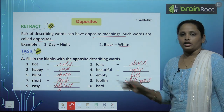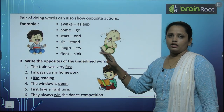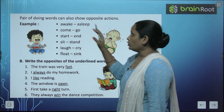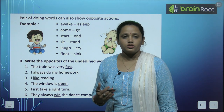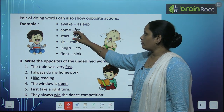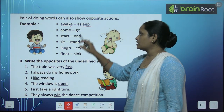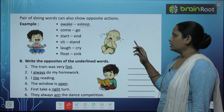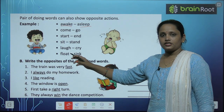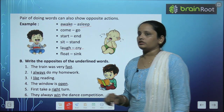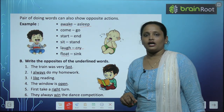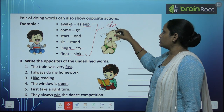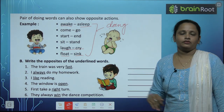Now, pairs of doing words can also show opposite actions. Jo doing words hai, unke bhi pair jo hai, opposite action bataate hai. Jaisa ki awake — awake means jagna. Asleep means sona. Dono kya hai? Doing words. Come, go. Start, end. Sit, stand. Laugh, cry. And float means tairna, and the opposite is sink. Yeh jitne bhi words hai, yeh sare kya hai? Doing words hai — means hum jo bhi kaam karte hai.